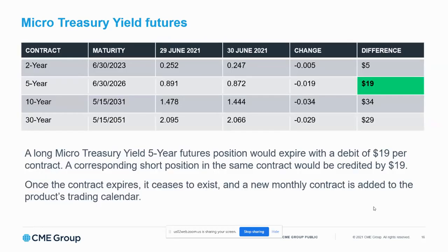Here's a quick P&L example. Let's say the 5-year on June 29th was priced at a yield of 0.891%, and on June 30th — the day this contract would have expired — the yield had gone down to 0.872%. The difference is essentially 1.9 basis points. One basis point is worth $10, and the 0.9 is another $9, so the P&L difference would have been $19. If you had sold this 5-year on June 29th at 0.891 and let it expire settling to 0.872, your account would be credited $19. But if you want to maintain your short position, you do what we call a roll.